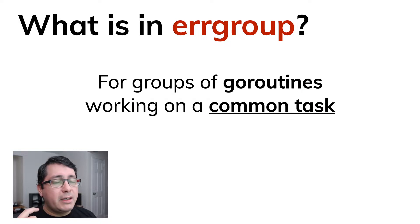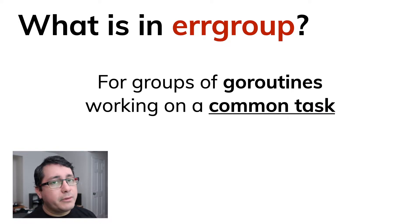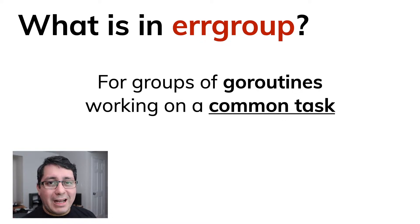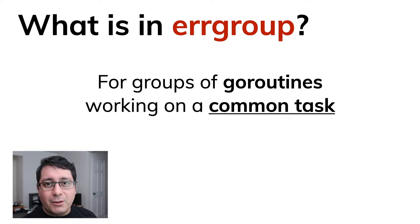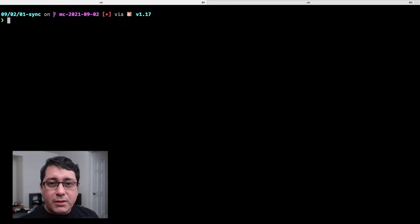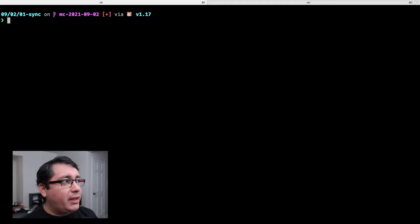The cool thing about error group is it works for a group of goroutines working on a common task. This is really common and I want to show you the actual code because this episode is more hands-on than the previous one. Let's jump into the code to show you how this works in real life. As usual, the link to this code will be in the description — feel free to clone the repo and follow along.